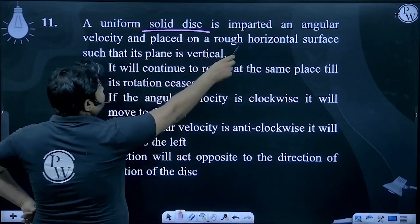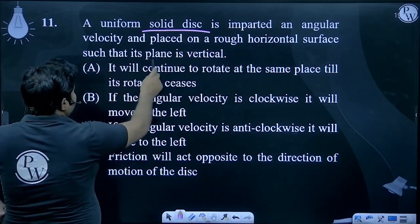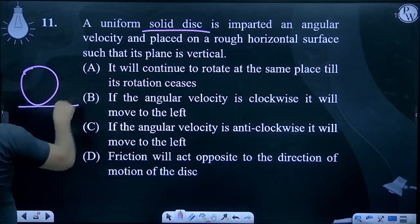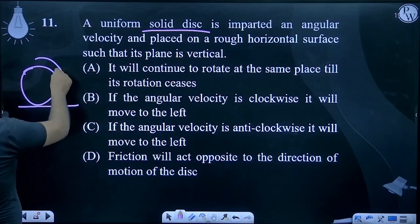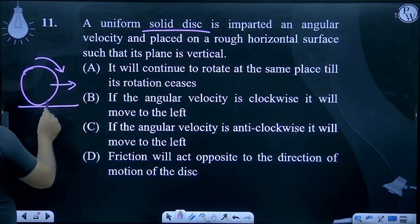So uniform solid disk, it will give a rough surface and plane vertical. Basically, it will give a speed and if it will give a speed in this direction, clockwise, then it will move to the right side.